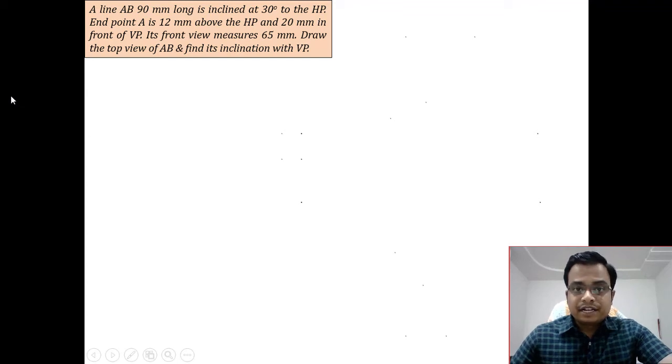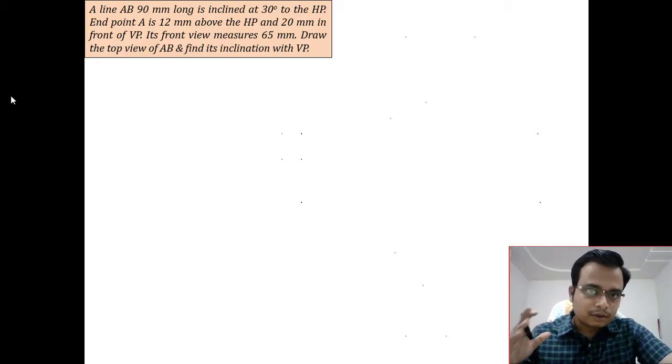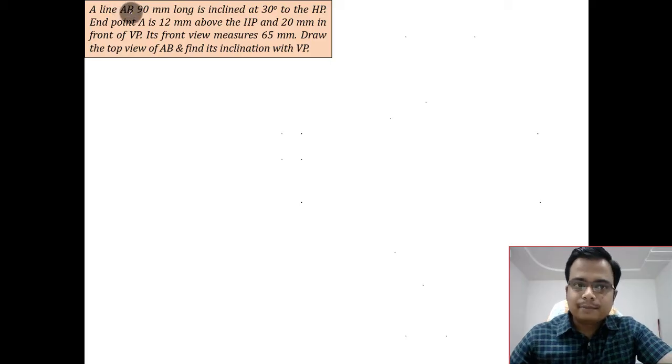Hi everyone, this is Manas, your friend Natyuta, and I'm back with another video on Level 2, that is projection of line inclined to both HP as well as VP. Here we go. So we've got a line AB which is 90 millimeters long.